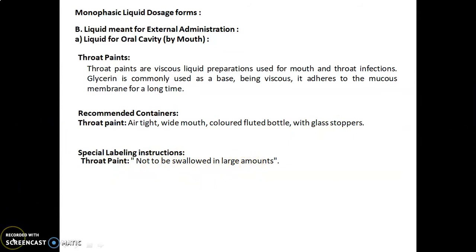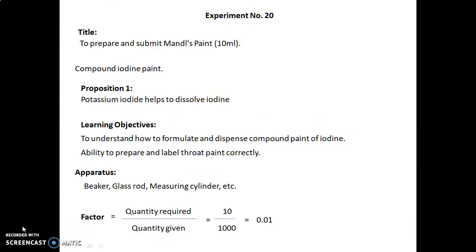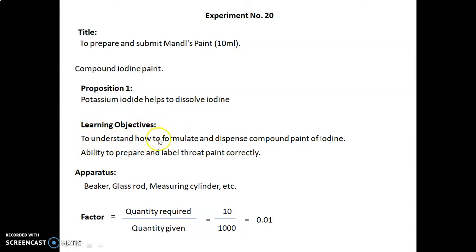Special labeling instructions for throat paint are: 'Not to be swallowed in large amounts.' Now let's discuss Experiment Number 20. The title of today's experiment is to prepare and submit Mandl's Paint 10 ml. Compound iodine paint — proposition one: potassium iodide helps to dissolve iodine. Learning objectives are to understand how to formulate and dispense compound paint of iodine, and the ability to prepare and label throat paint correctly. Apparatus required: beaker, glass rod, measuring cylinder, etc.